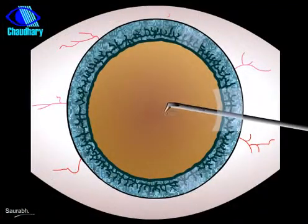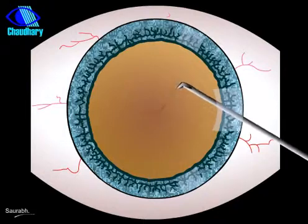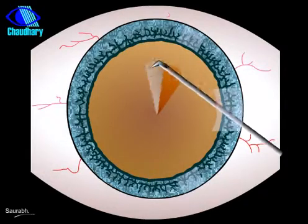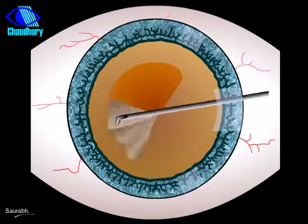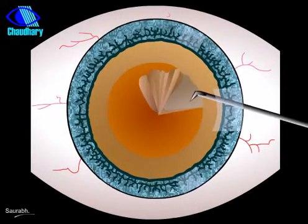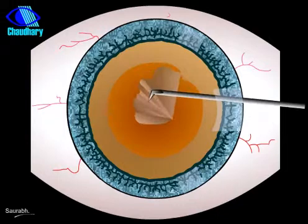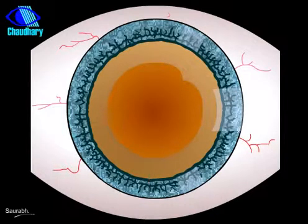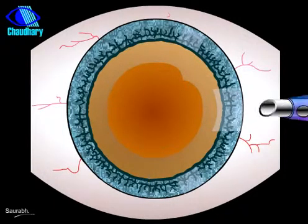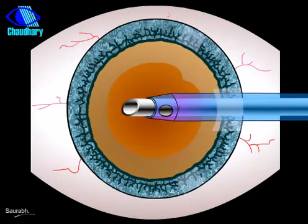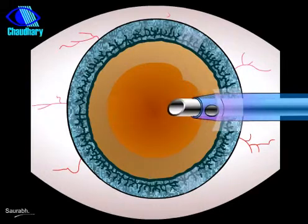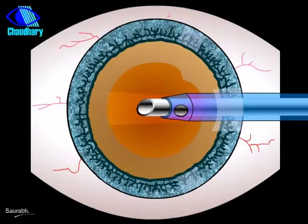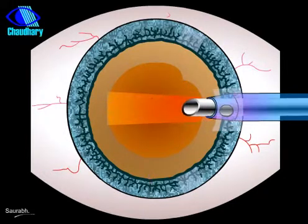With a fine needle, the membrane covering the cataract is opened up. Through a 2.8mm incision, a phaco needle is inserted within the eye.